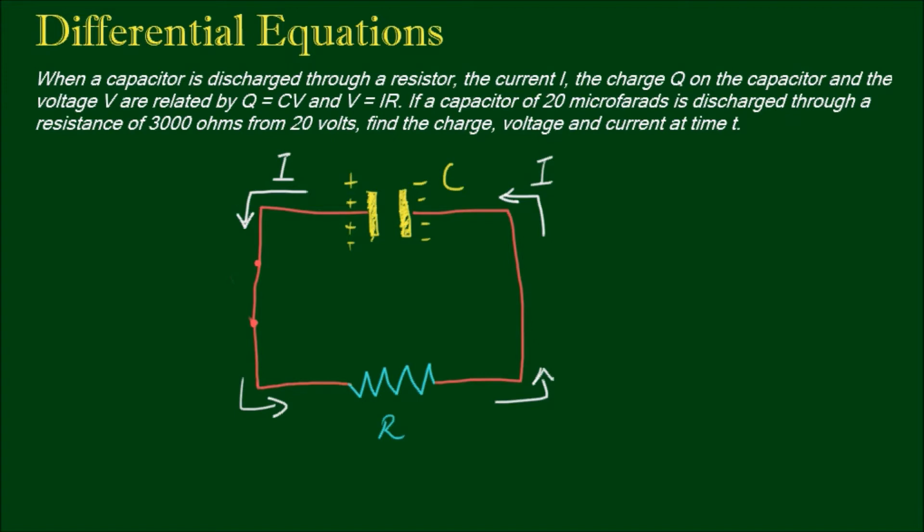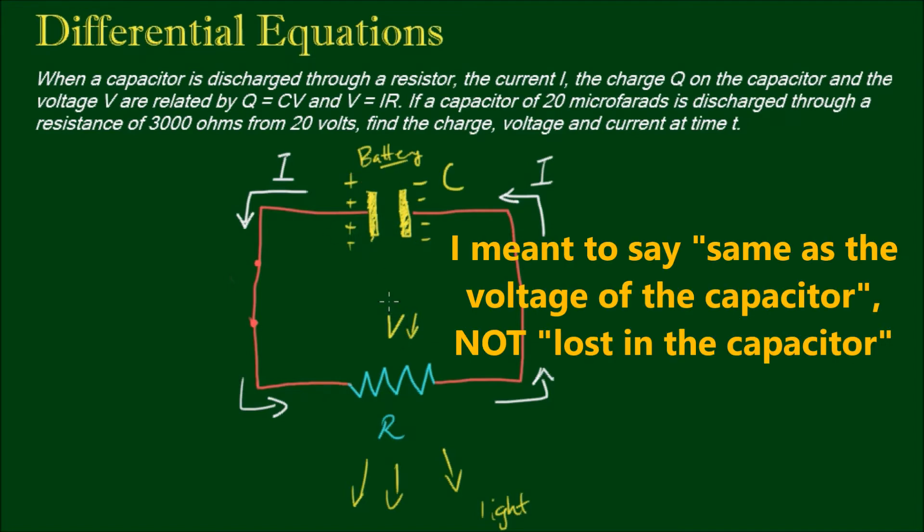And the current will flow until the capacitor is completely discharged. So you might like to think of this circuit as perhaps a camping torch, where the resistor here is your light source. It might give off some light. And the capacitor is your battery. So the capacitor starts with 20 volts. But as the switch is closed and the current starts flowing, it'll gradually lose that voltage over time. And to make sure that we don't short circuit, the voltage drop across this resistor will be the same as the voltage that's lost in the capacitor.